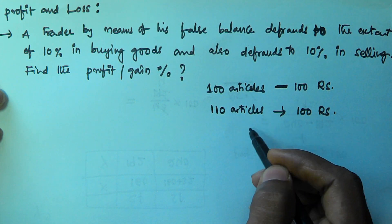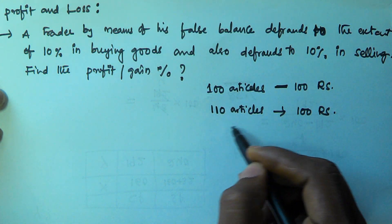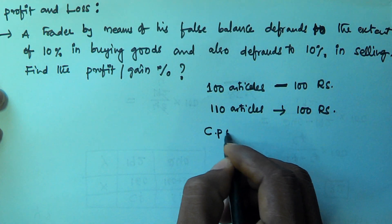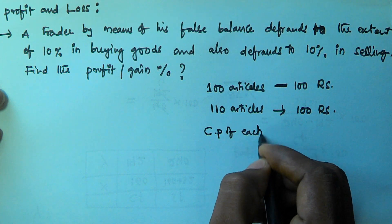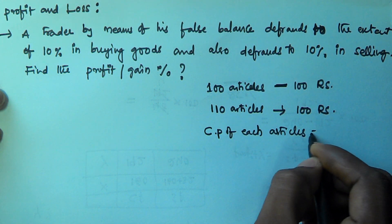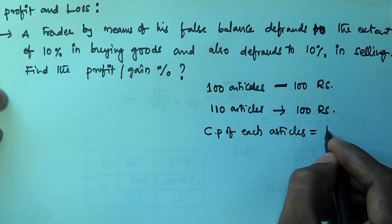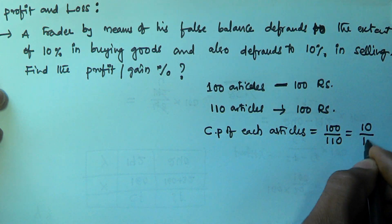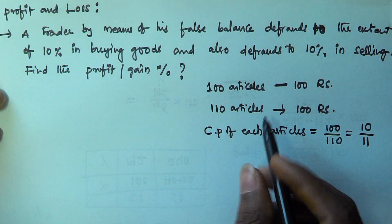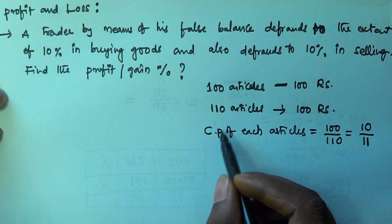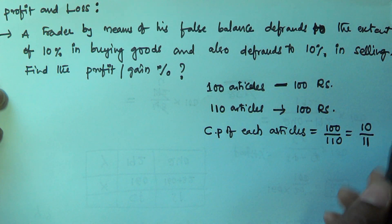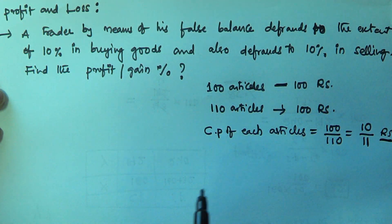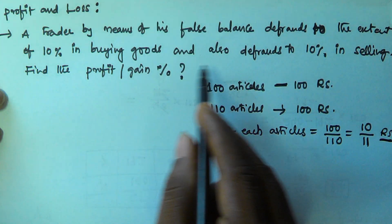By defrauding, he is buying 110 articles for 100 rupees. So the cost price of each article is equal to 100 rupees divided by 110 articles, which is 10/11 rupees. So the cost price of each article is 10/11 rupees.